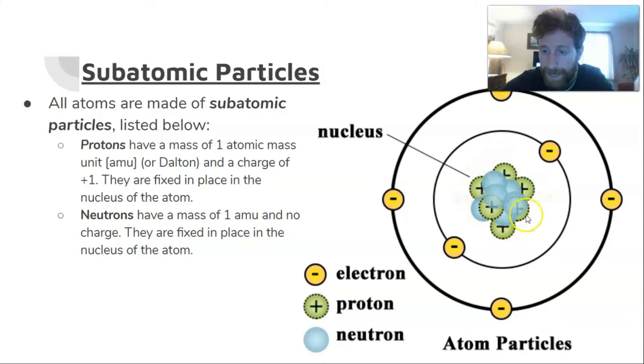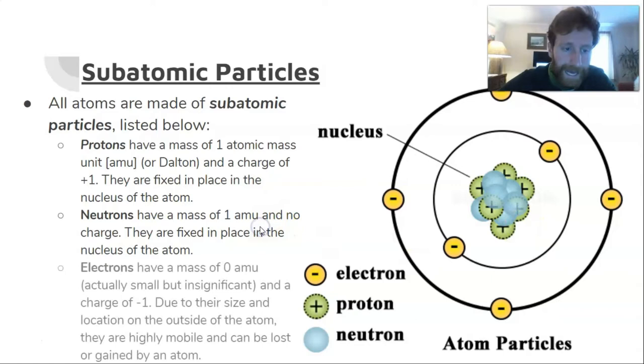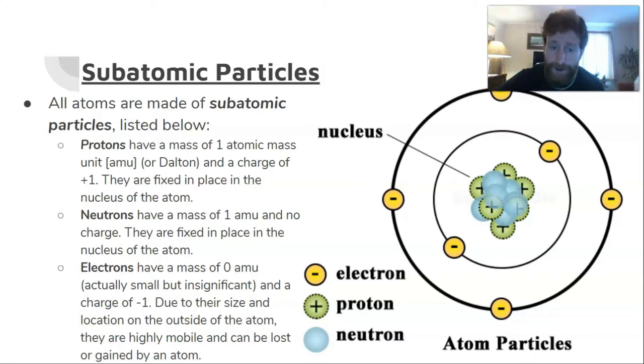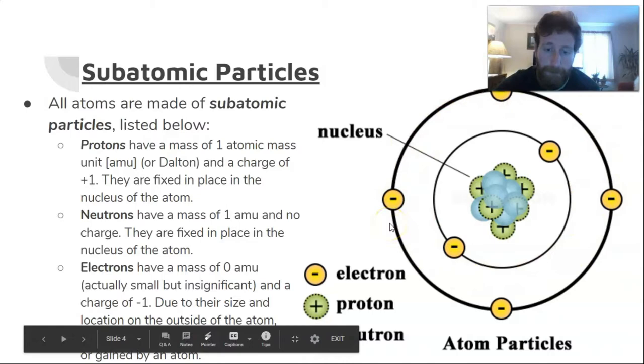Lastly, very important in chemistry is the electron. Electrons have a mass of zero atomic mass units—it's actually about one two-thousandth that of a proton, but for the sake of this we're just gonna say it's so small it's insignificant. We'll call their mass zero, and they have a charge of negative one. Due to their small size and location orbiting outside of the atom, electrons are easily lost or gained by the atom. We like to say they're highly mobile, and that's how chemical reactions take place and how chemical bonds form.